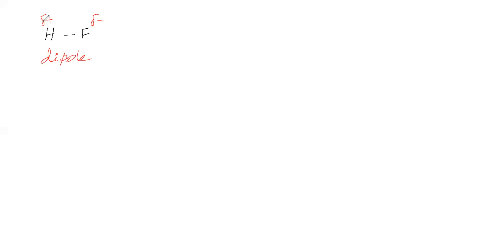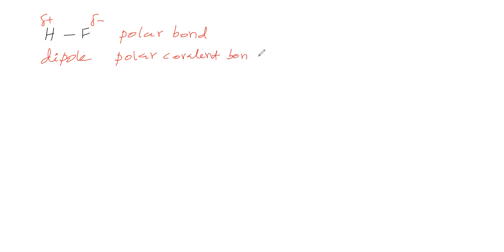This bond has a partial positive charge at one end and a partial negative charge at the other end. Therefore, this bond is called a polar bond or a polar covalent bond. If polarity is present — that is, if the bond is polar — then that bond has a dipole moment.